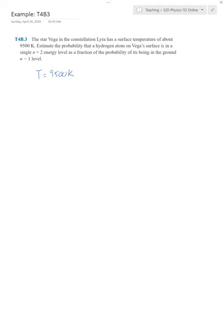So we're going to estimate the probability that a hydrogen atom on Vega's surface is in the n equals 2 energy level versus it being in the n equals 1 level. Just a reminder, the hydrogen atom n equals 1, the energy is equal to minus 13.6 eV. And then for the n equals 2, the energy is equal to minus 13.6 divided by 4 eV, which I think is negative 3.4 eV.